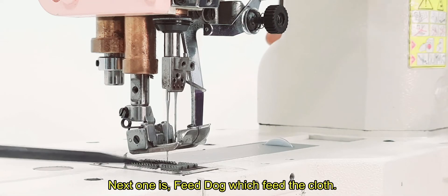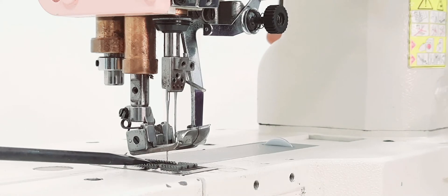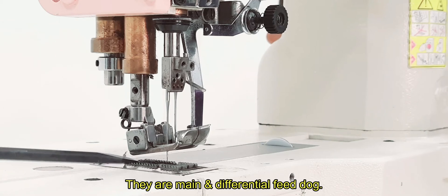Next one is feed dog, which feeds the cloth. In flat lock machine have two different type feed dog, they are main and differential feed dog.